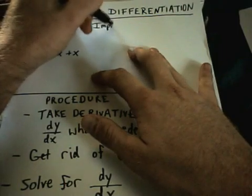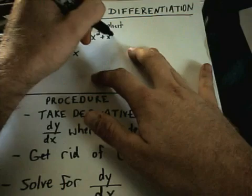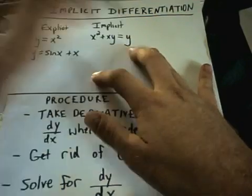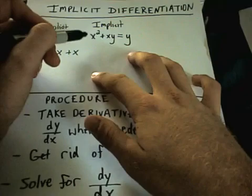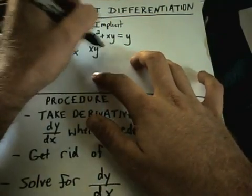An implicit equation is one where the x's and y's are all mixed up on the same side. So you can see we have an x and a y on the same side. That's considered an implicit equation.